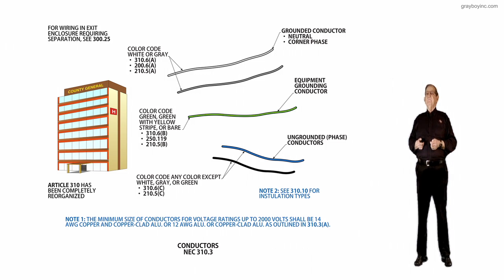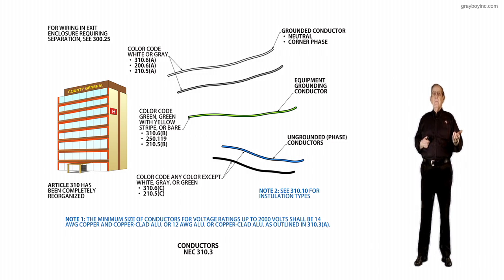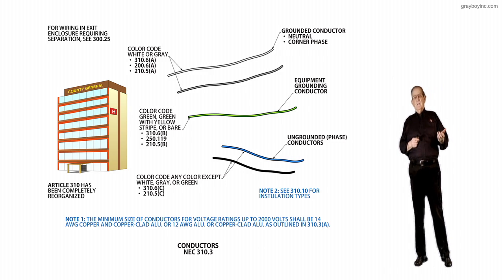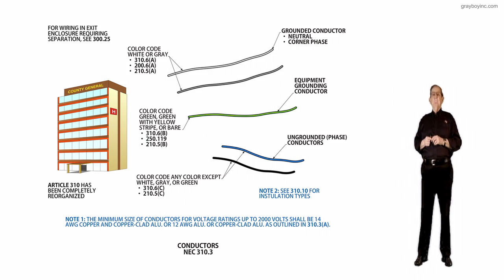If you look at number 2, up at the very top of the illustration, we deal with the grounded conductor, neutral or corner ground. Now that's important. To get your references, you can go to 310.6A and it would refer you to 200.6A for your color coding or your identification and 210.5A for the branch circuit. But for your feeder, it would send you over to 215.12C to pick that up.